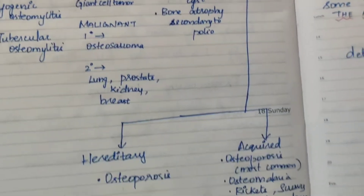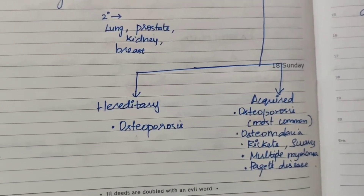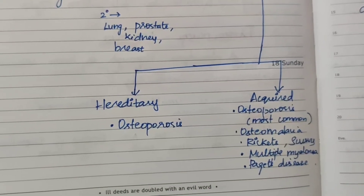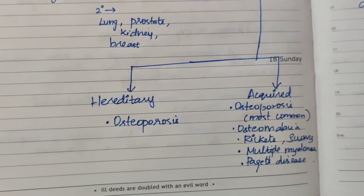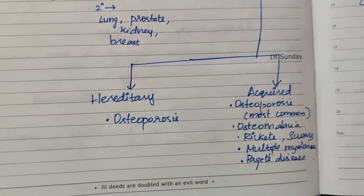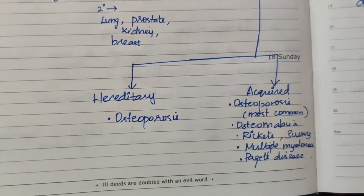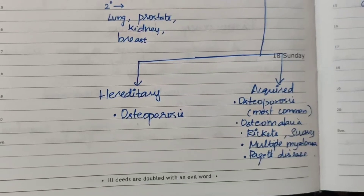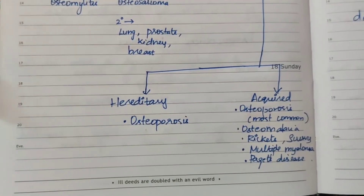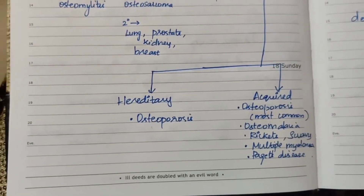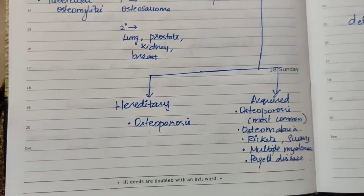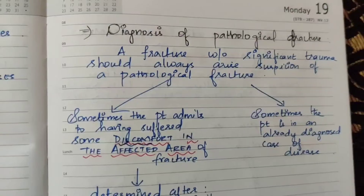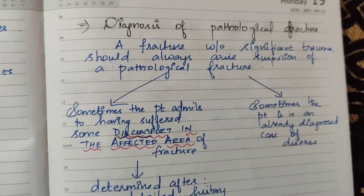Generalized diseases include hereditary osteoporosis, acquired osteoporosis, osteomalacia, rickets, scurvy, multiple myeloma, and Paget's disease. In all these conditions, the bone is already weak due to the pathological disease, and fracture may occur easily.